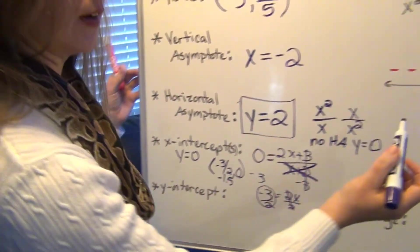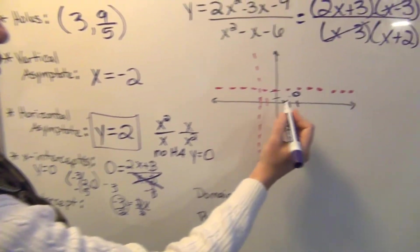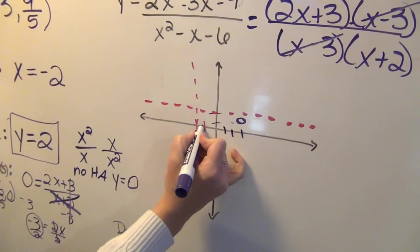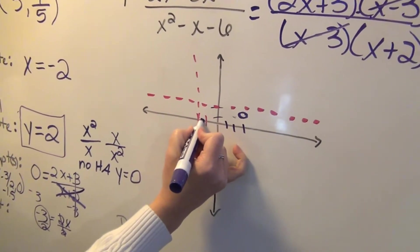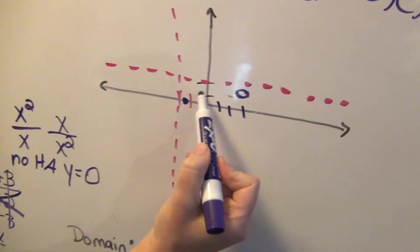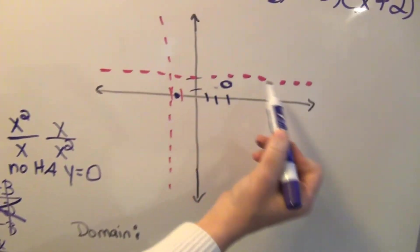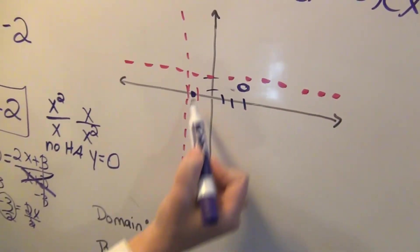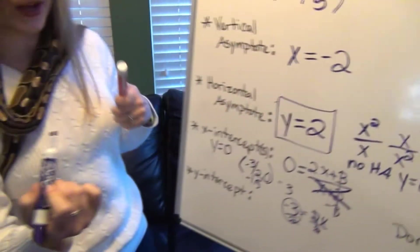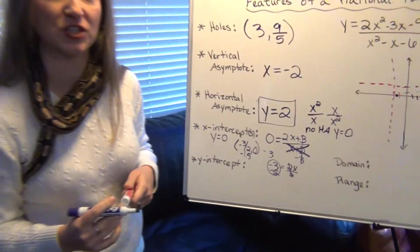So that tells me that I have an x-intercept at negative 3 halves, 0, or negative 1.5. All right, so I have a point here now at negative 1.5, 0. We know we have a point there. We can kind of see our rational piece coming into play here. We think we're going to have a piece right here. But let's get our y-intercept to see if we can get a little more information.